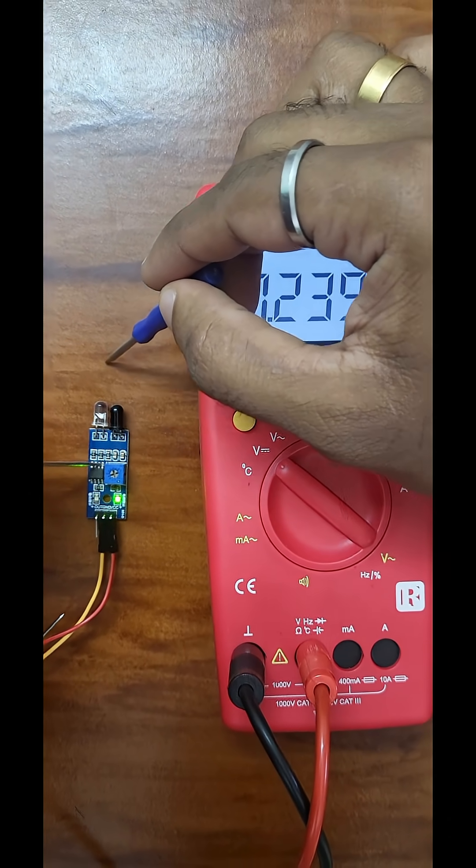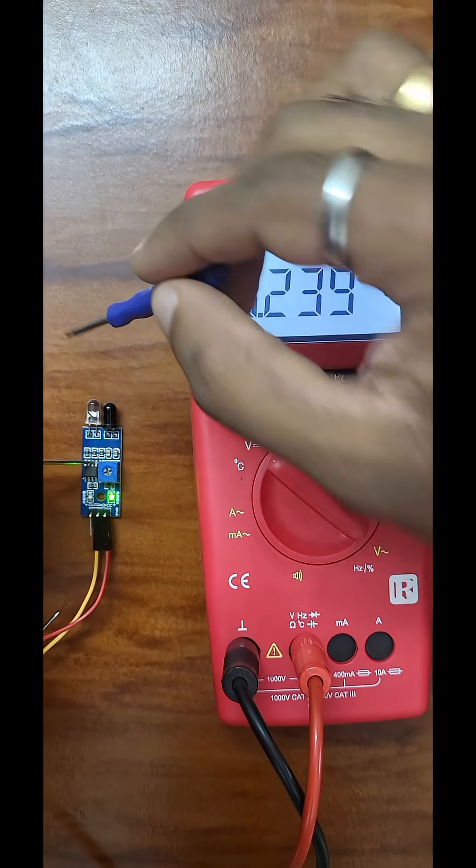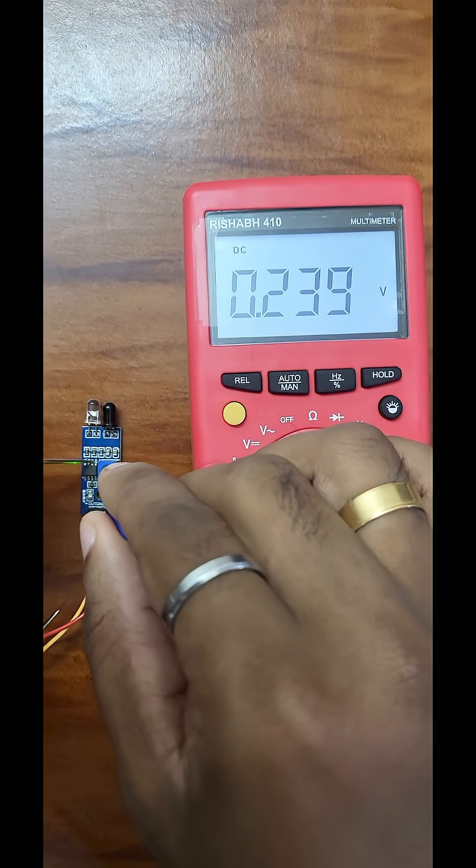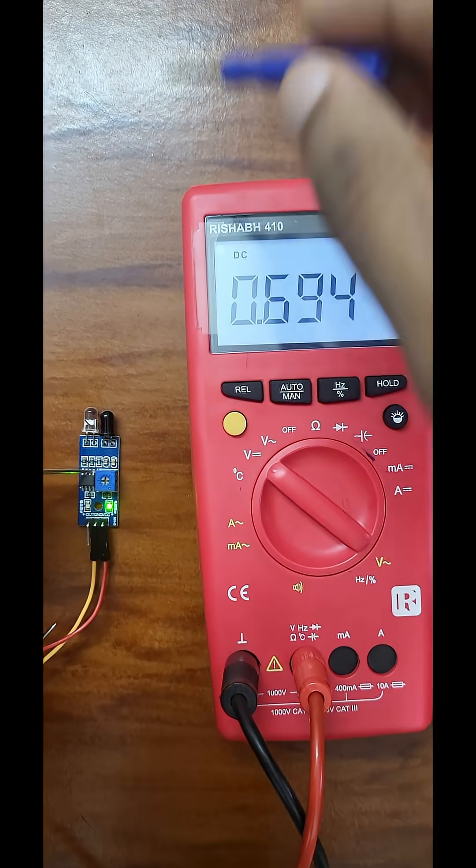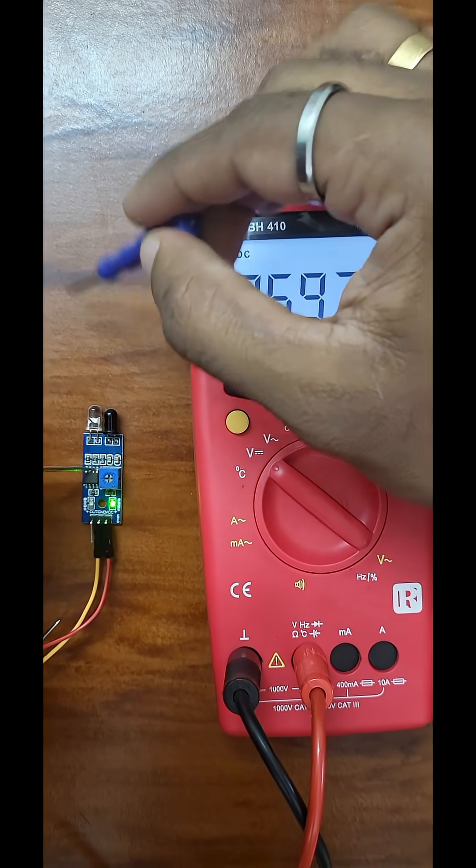If we increase the reference voltage, the sensor becomes more sensitive. Because even a weaker reflection, slightly lowered photodiode voltage, can go below the reference and cause detection.